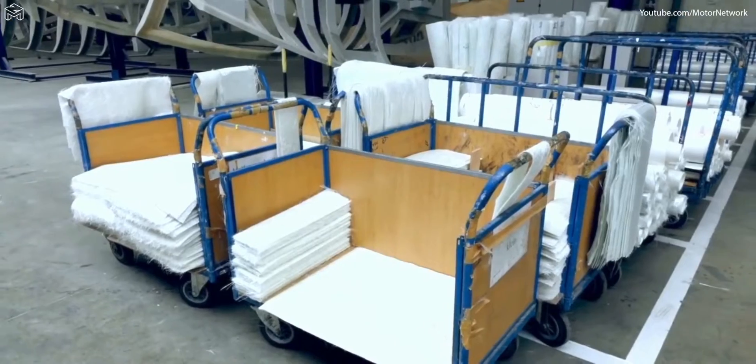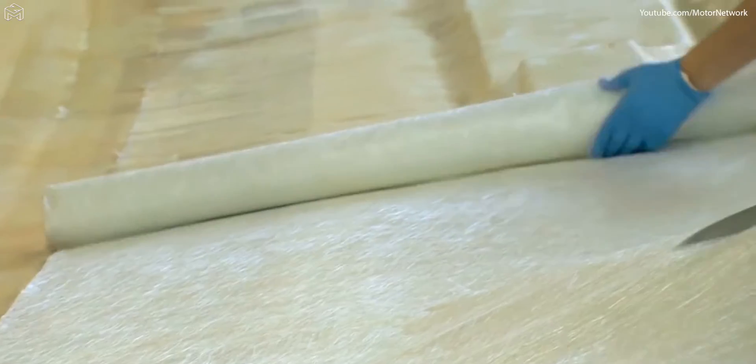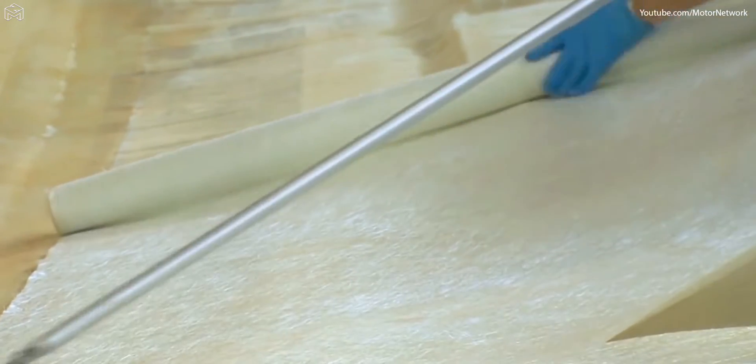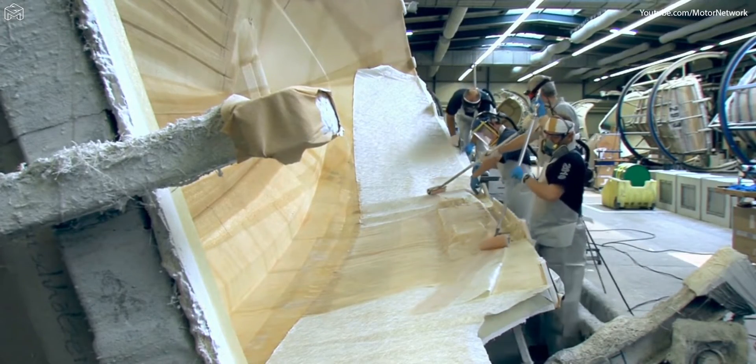For each Bavaria, the design and production team prepares a specific load profile. Taking this as their basis, they then produce a lamination plan detailing the arrangement of the fiberglass mats in the mold and laminated on in several work steps.